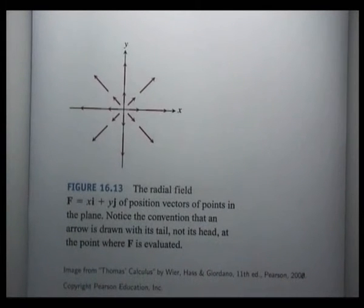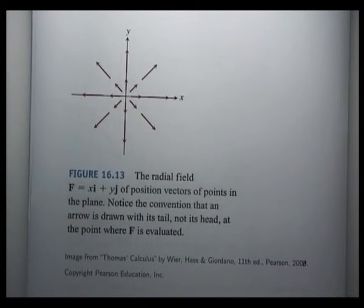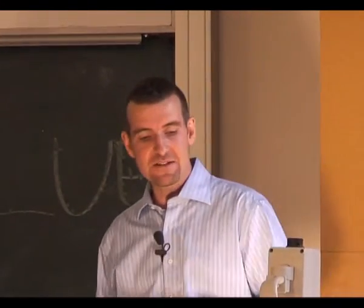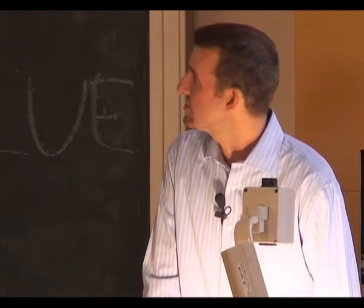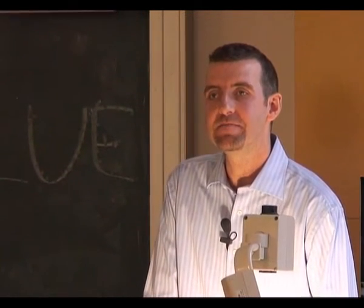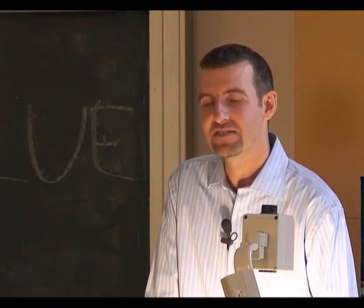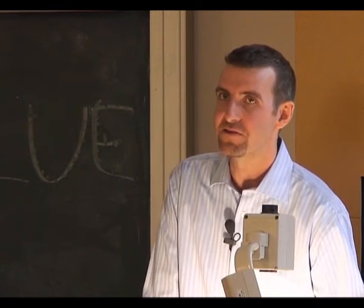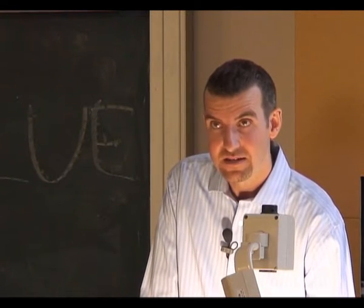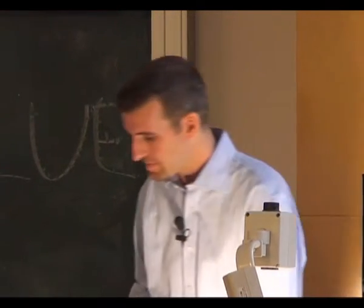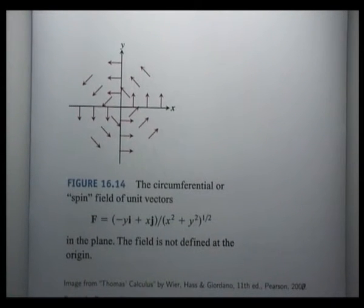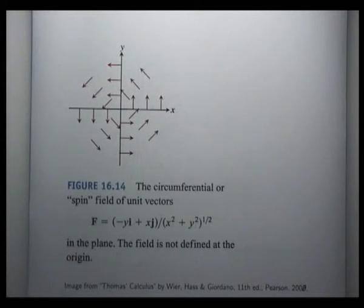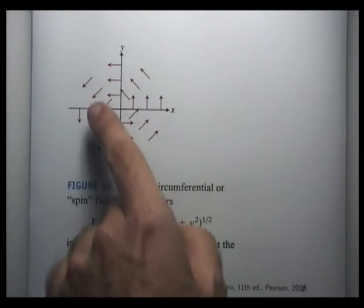Let's look at some concrete examples of vector fields. This particular example is called a radial field — it's very simple. You can see as we move away from the origin the magnitude increases, and all the vectors are pointing away from the origin. This vector field is called a spin field. You can think of this as leading to rotations — it looks like we've got some sort of rotation in our vector field.